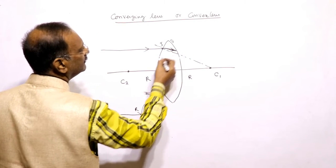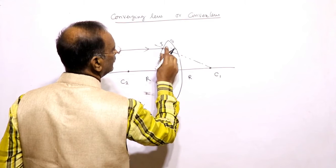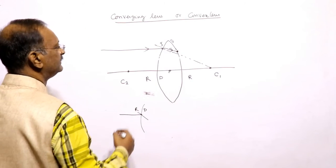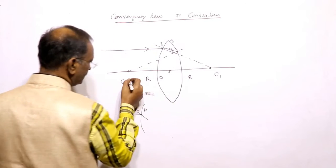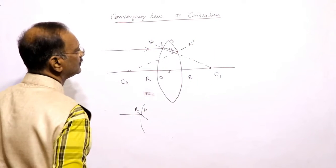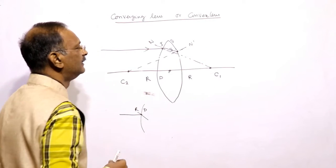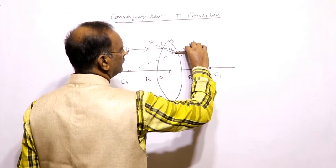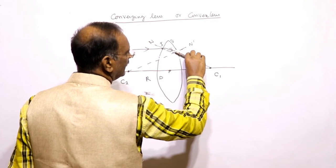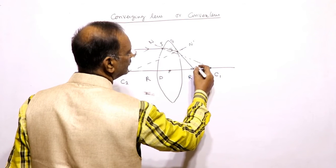Within the medium it will go in a straight line, bent towards the normal. Again, at the second interface, refraction will take place. Here, for the second surface, we draw the normal from the second center of curvature C2. From denser to rarer medium, the ray will bend away from the normal — so it will go like this, converging to a point where the image is formed.